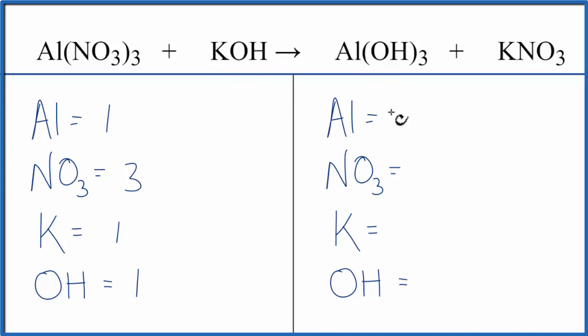On the product side of the equation, we have one aluminum, one nitrate, that NO3, one potassium, and then three times the one, three of these OHs of this hydroxide, polyatomic ion.